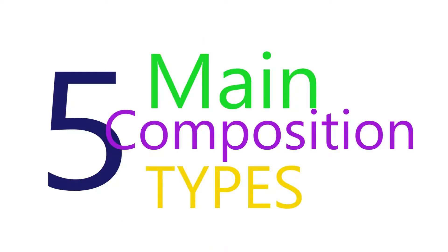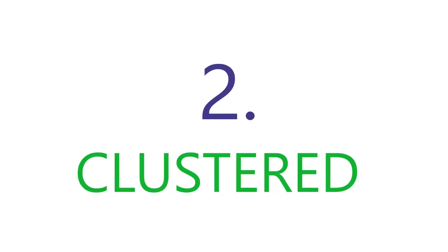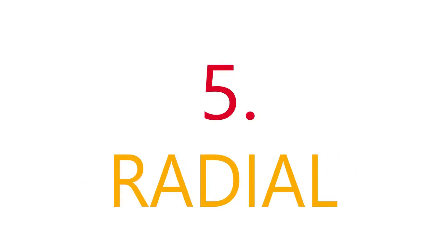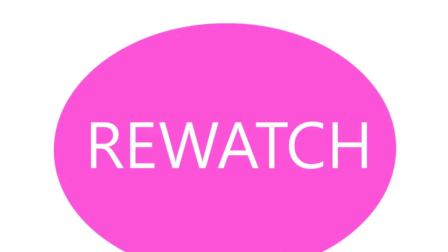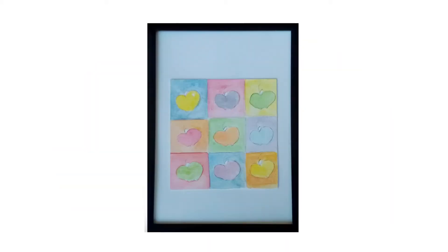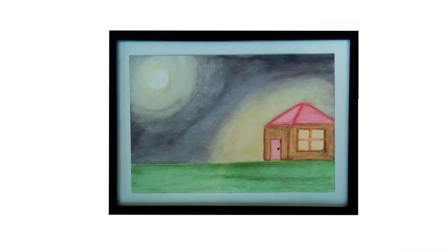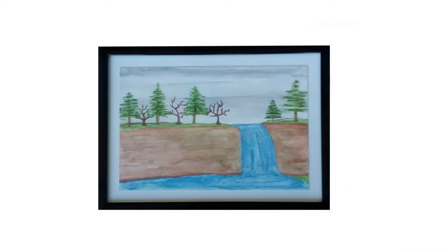So let's recap. There are five main composition types: centralized, cluster, grid, linear, and radial. Re-watch this video so you can fully comprehend how to use these different composition types to communicate with your audience.